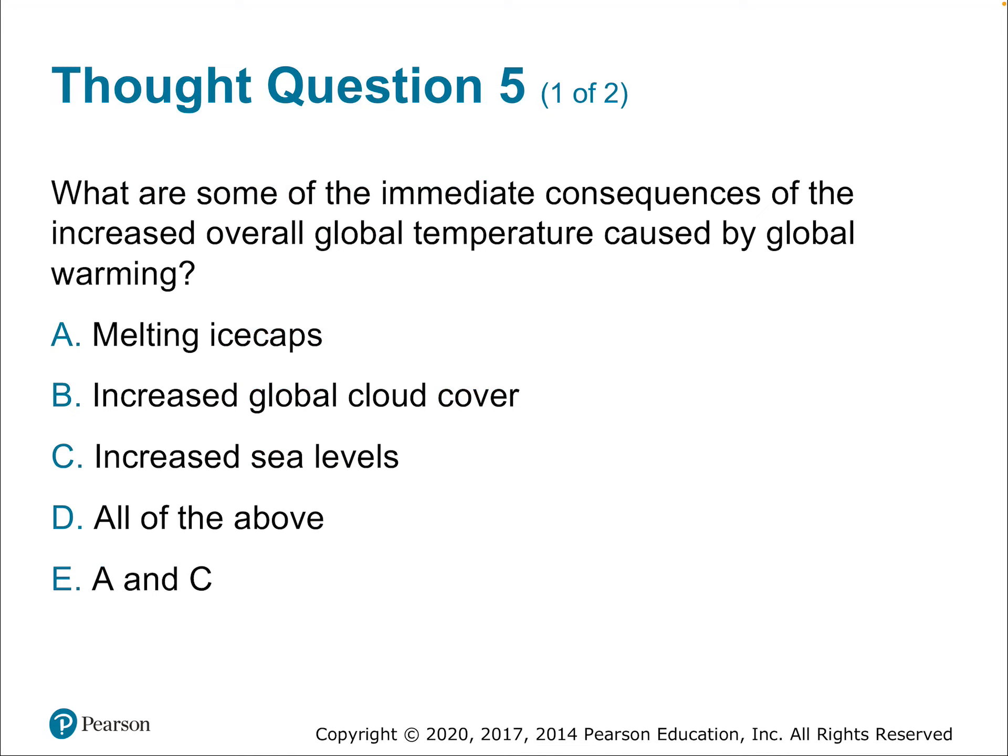So thought question: what are some of the immediate consequences of the increased overall global temperature caused by global warming based on this concept of evaporation and condensation? Should we expect melting ice caps, increased global cloud cover, increased sea levels, all of the above, or only A and C? All of the above. We have melting, we're going to have a greater amount of evaporation bringing many H2O molecules up into the atmosphere, and we're going to have more water coming in through melting causing sea levels to rise.